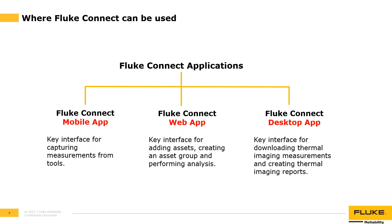Fluke Connect software works in three different applications. The Fluke Connect mobile app is the key interface for capturing measurements from tools. The Fluke Connect web app is where you go to create assets, asset groups, and perform analysis. And the Fluke Connect desktop app is the key interface for downloading thermal images, creating thermal image reports, and downloading acoustic images.